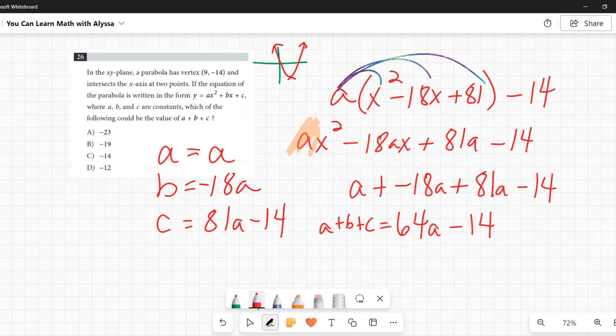Now, I'm asked to see which of these could be equal to this. Which of these numbers could be equal to 64a minus 14?